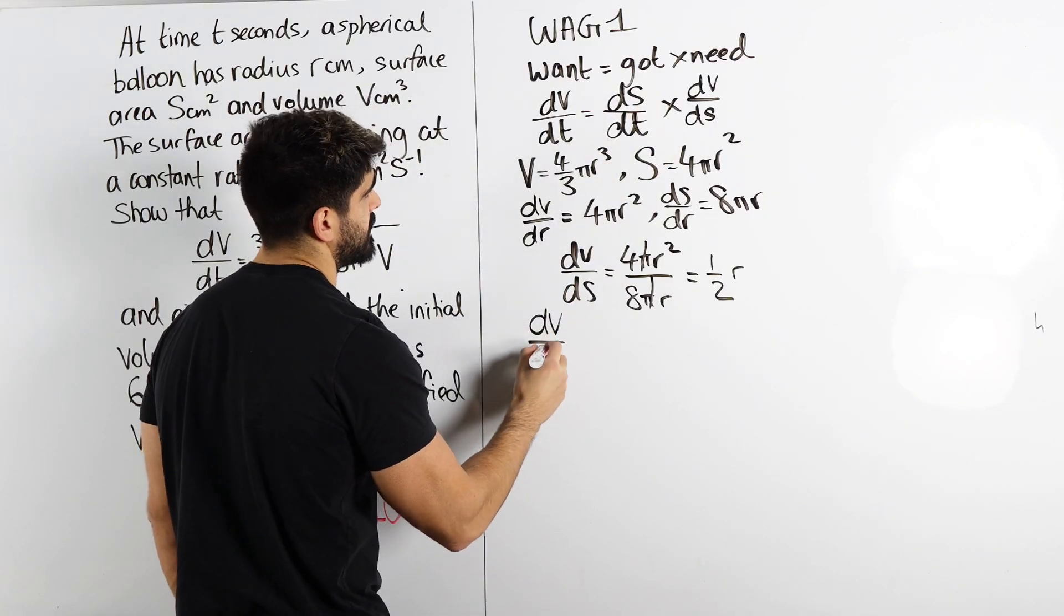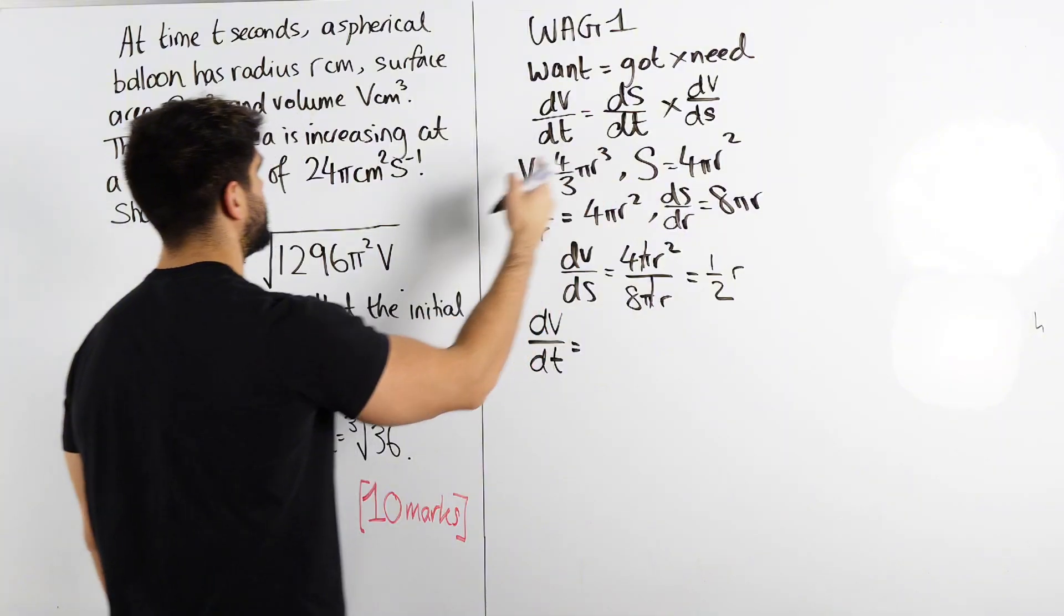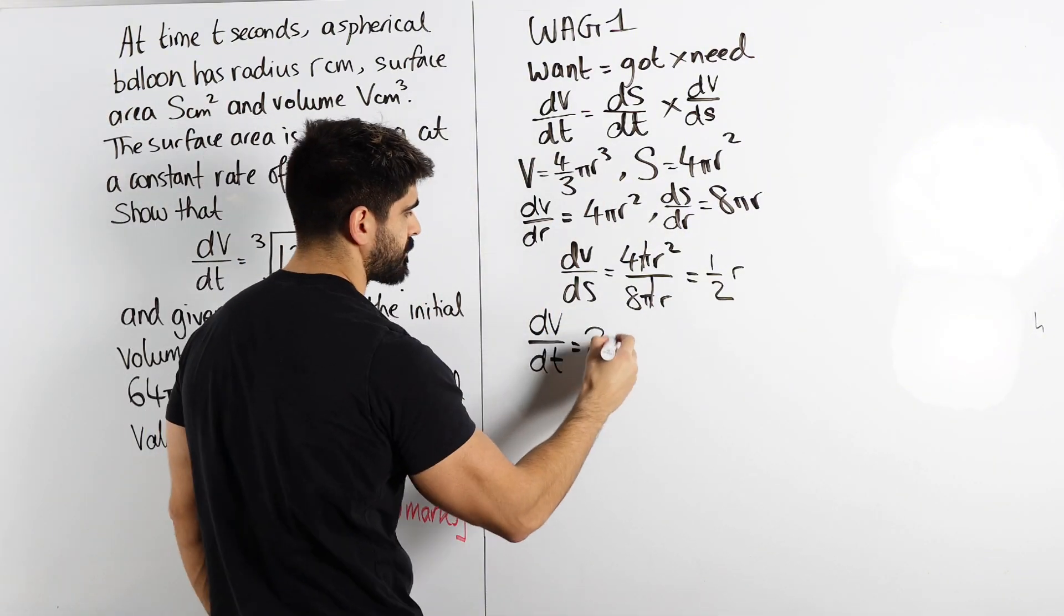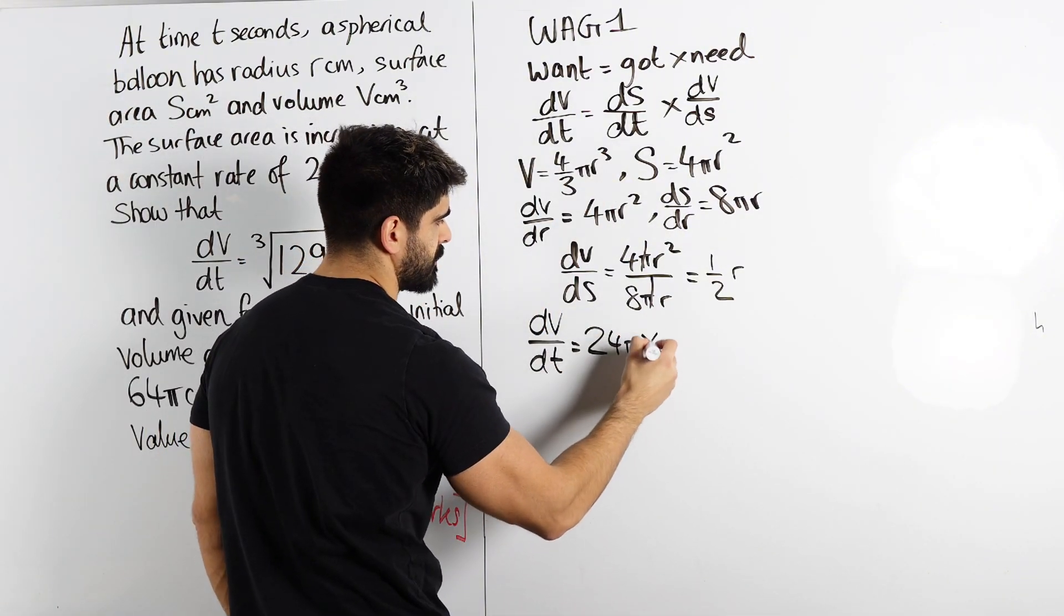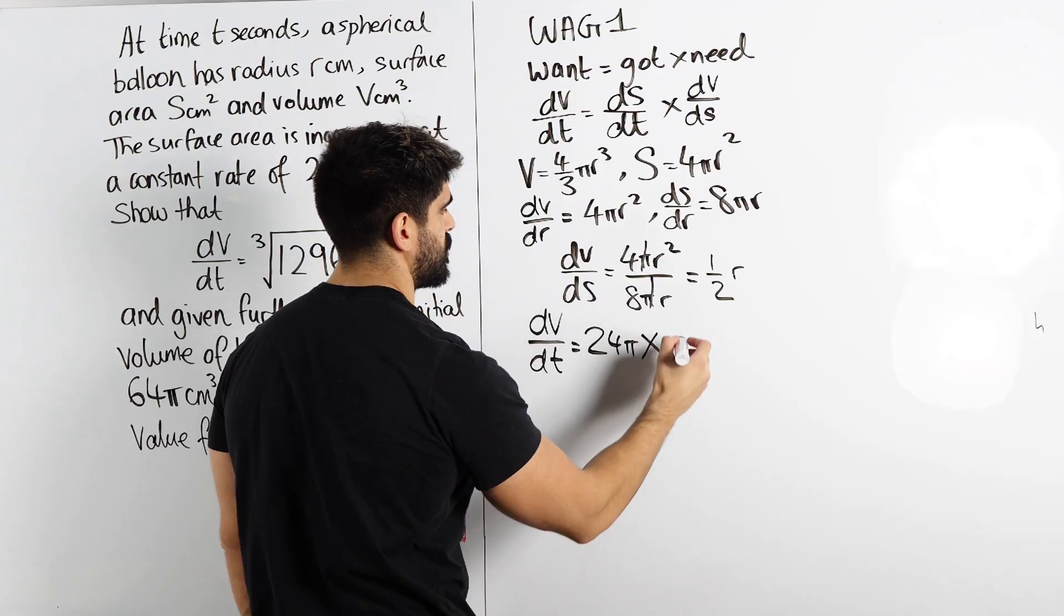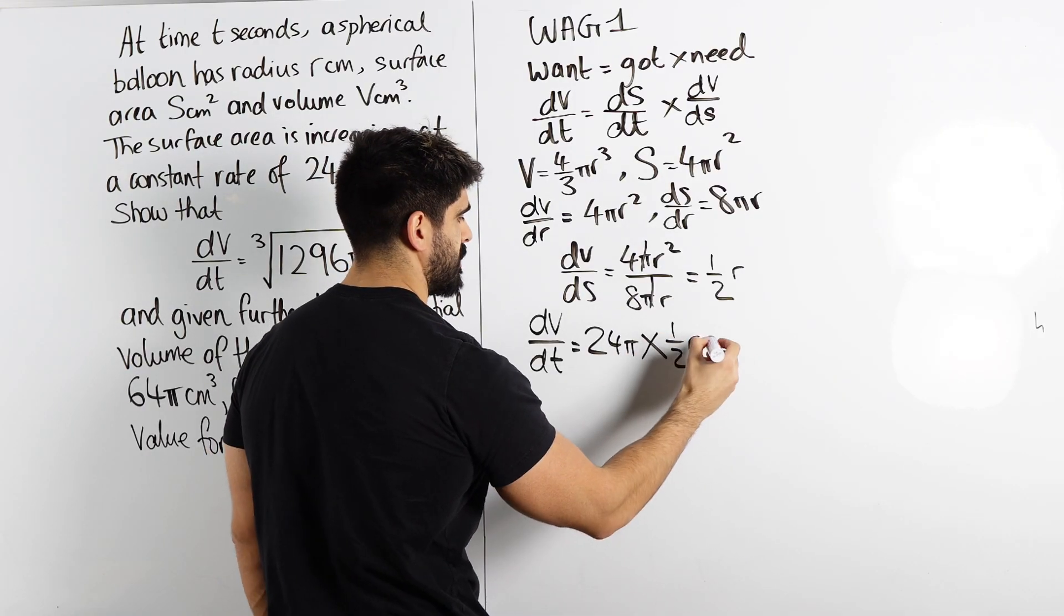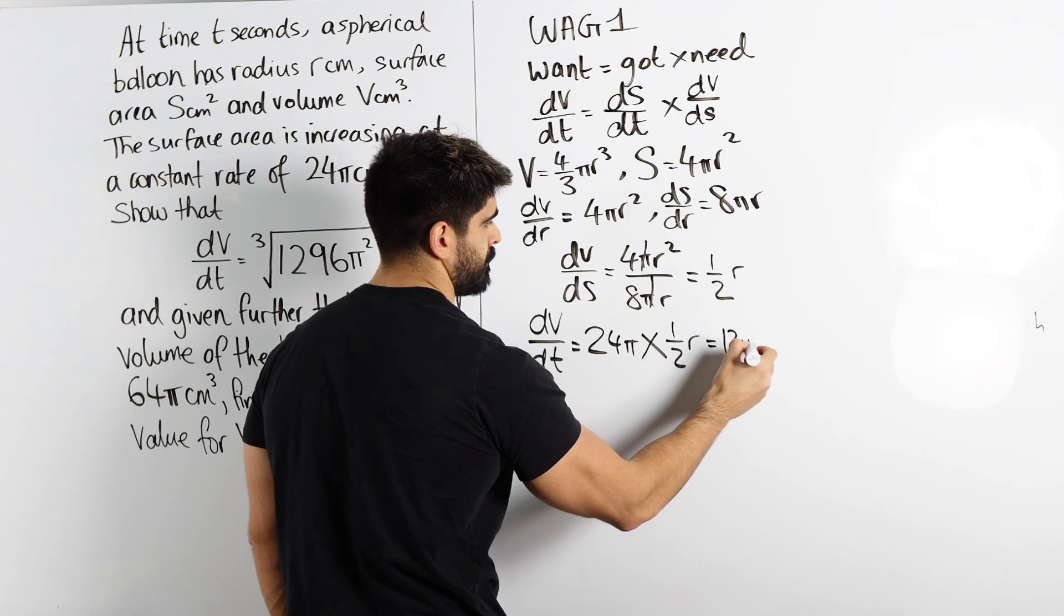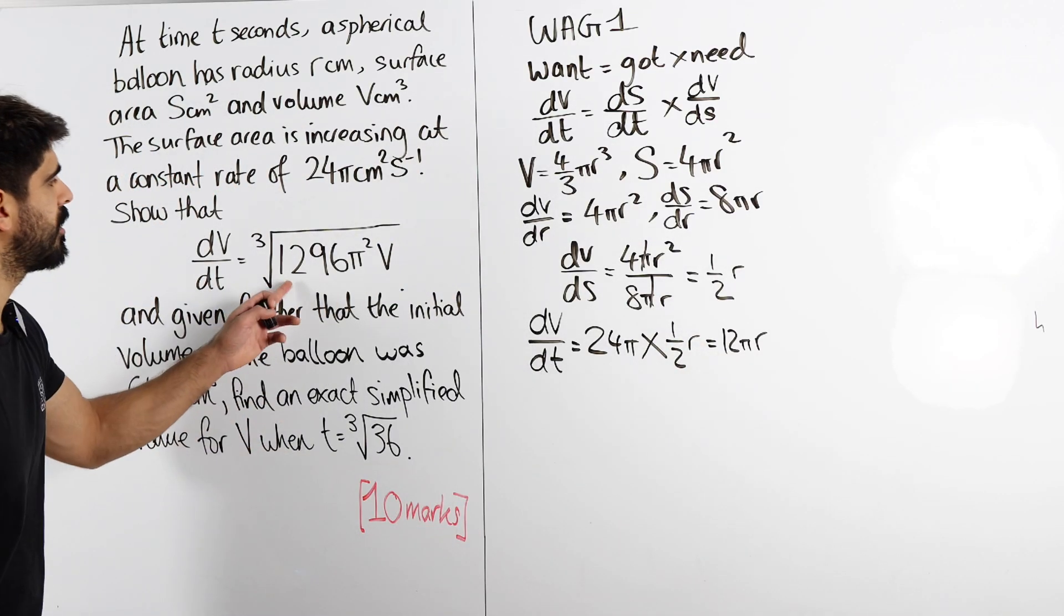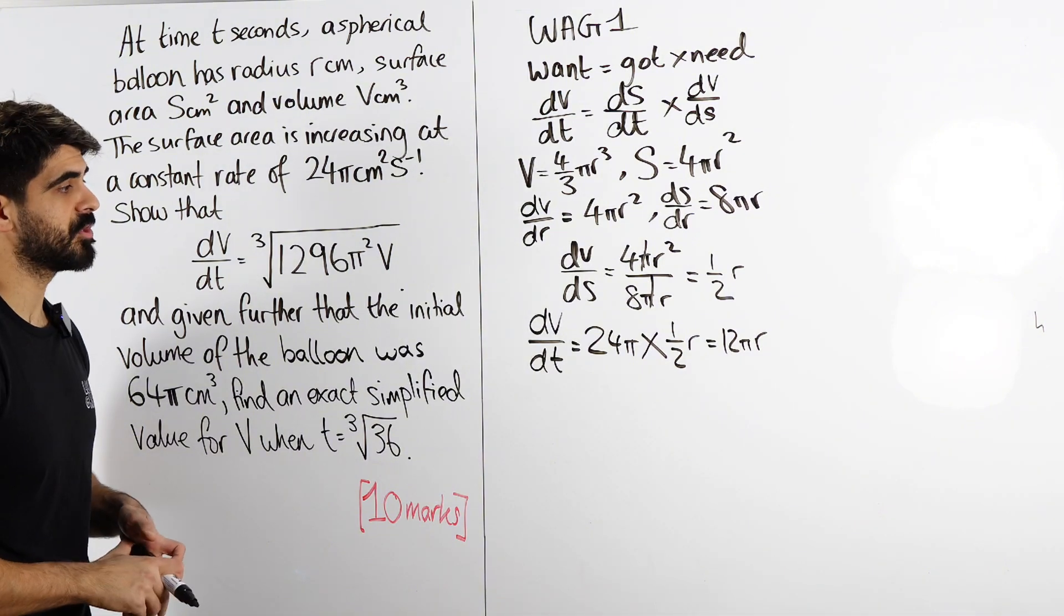And that is just going to go directly into this. So we're going to have dv by dt is ds dt, which is 24π, multiplied by dv ds, which is a half r. Half of 24 is 12. So we get 12π r, which is obviously not good enough because they want our answer in terms of v.